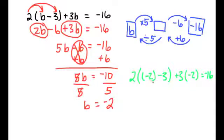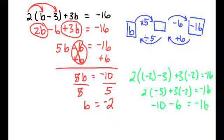Negative 2 minus 3 is negative 5. So I have 2 times negative 5 plus 3 times negative 2 equals negative 16. 2 times negative 5 is negative 10. Positive 3 times negative 2 is negative 6 equals negative 16. Negative 10 minus 6 or negative 10 plus negative 6 is negative 16, which equals negative 16. Hooray!